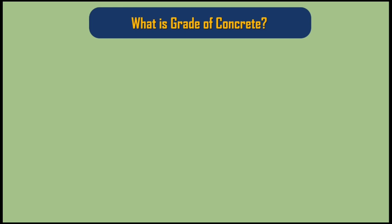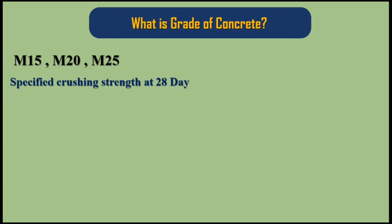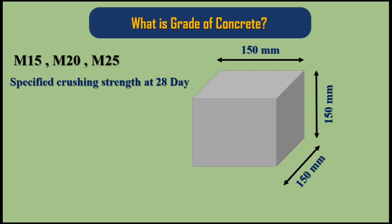What is grade of concrete? The grade of concrete corresponds to its characteristic compressive strength, tested using a 150mm × 150mm × 150mm cube. For example, M20 shows the crushing strength of that cube at 28 days is 20 N/mm².